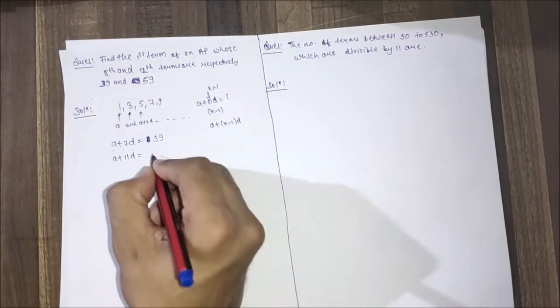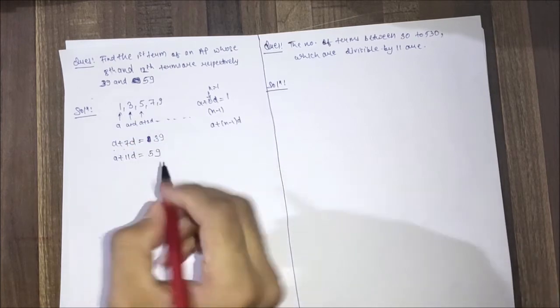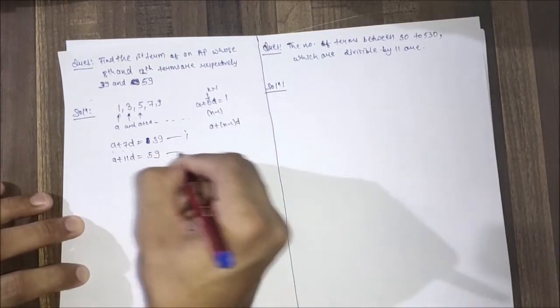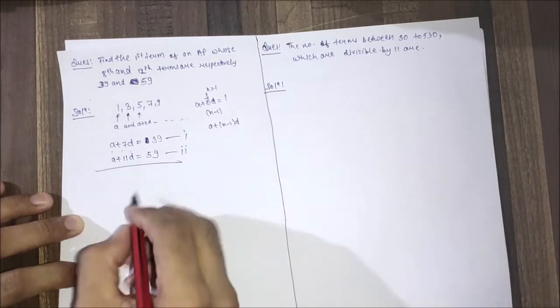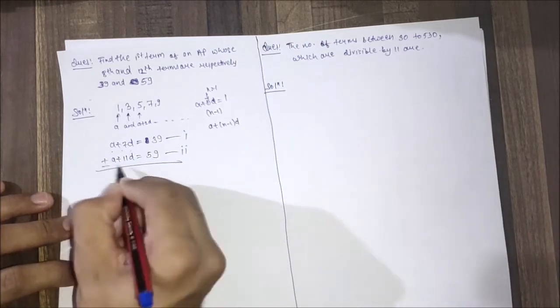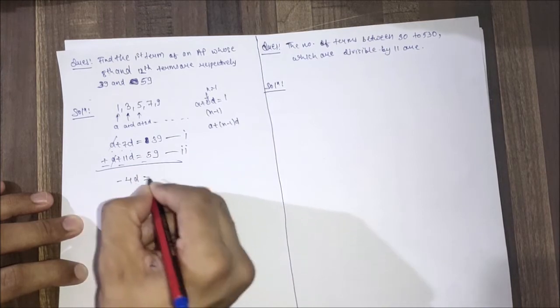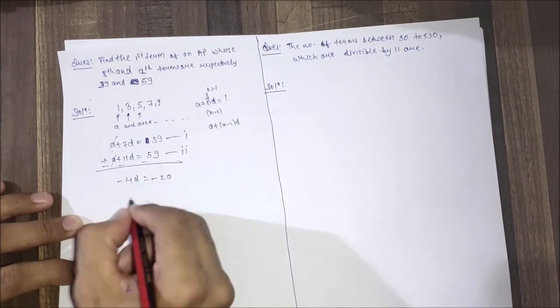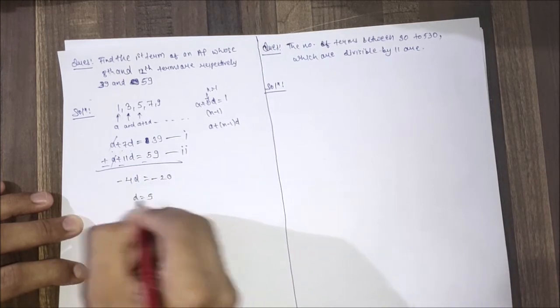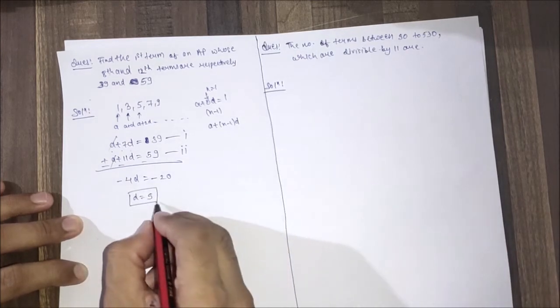Let's solve this equation. Subtracting these, we get -4d equals -20, so d equals 5. We got the common difference as 5.